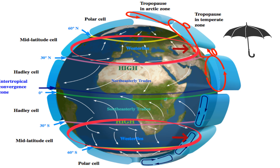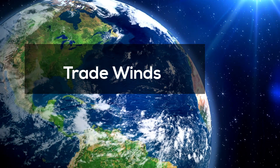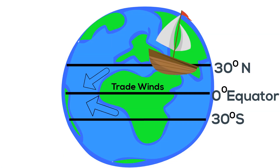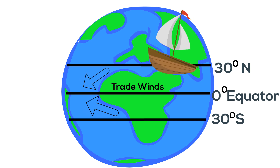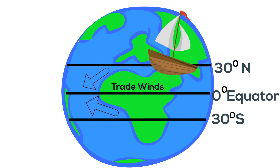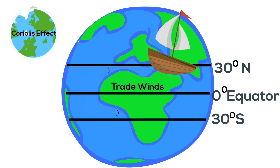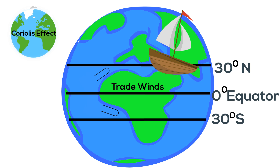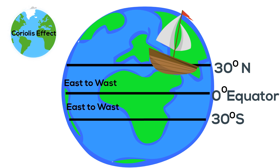Next are the trade winds. Between 30 degrees north and 30 degrees south of the equator, in an area called the horse latitudes, the earth's rotation causes air to slant towards the equator in a southwesterly direction in the northern hemisphere and a northwesterly direction in the southern hemisphere. The Coriolis effect, in combination with an area of high pressure, causes the trade winds to move from east to west on both sides of the equator.